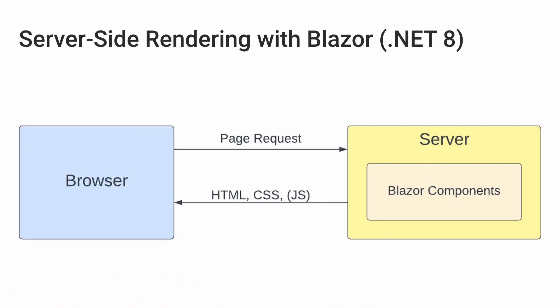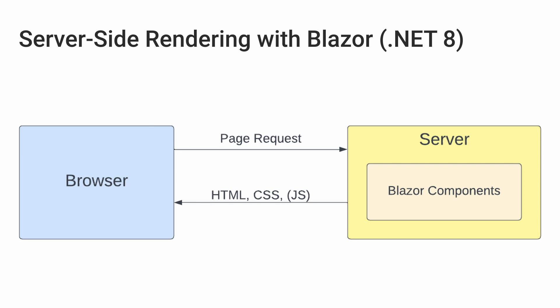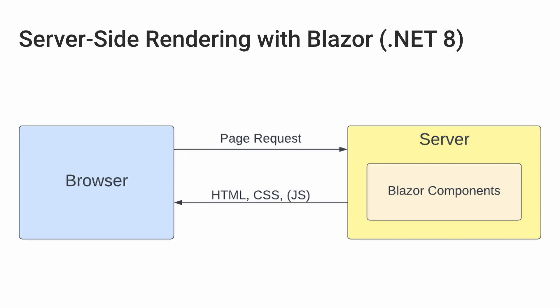With .NET 8 I don't need to fall back to those JavaScript web frameworks. Instead, I can combine the Blazor component model with the advantages of server-side rendering. The components are rendered on the server and the HTML output is sent to the browser. This allows for a quick first page load, a small download size, and no SignalR connection.